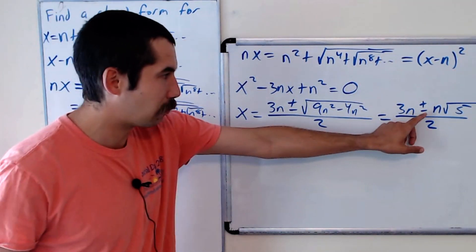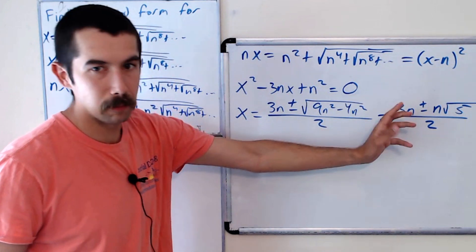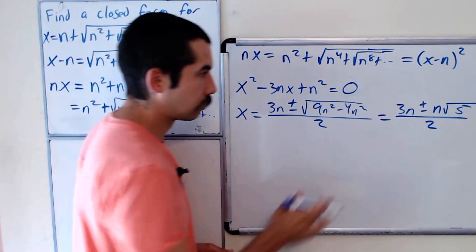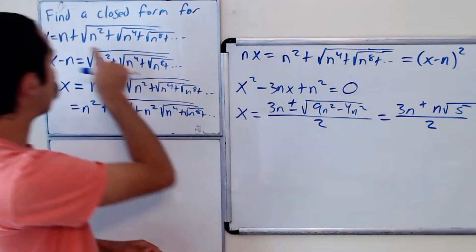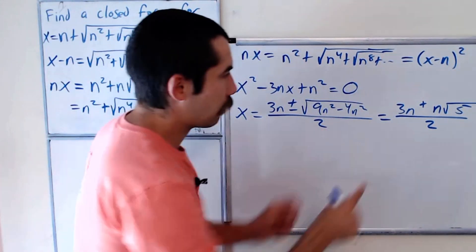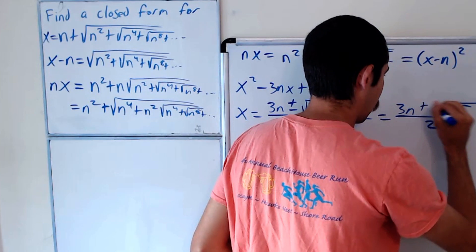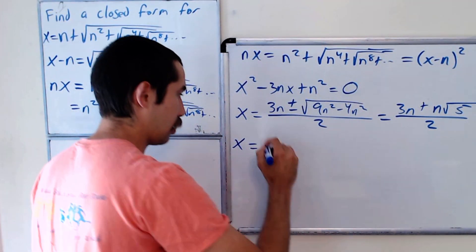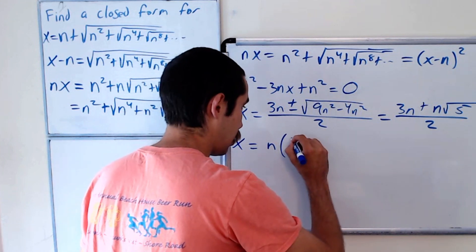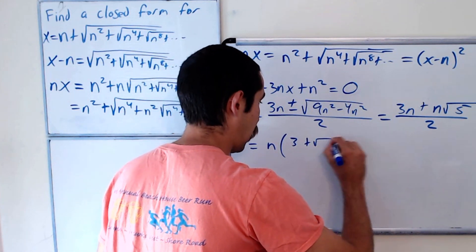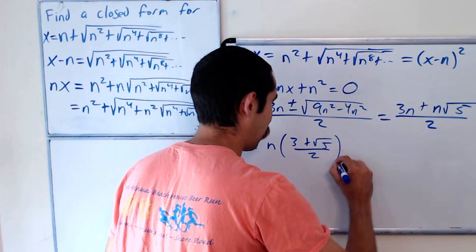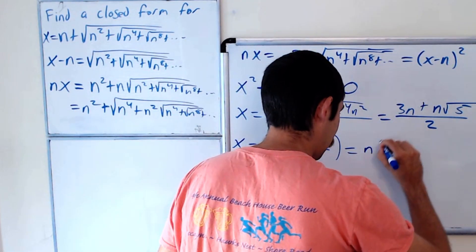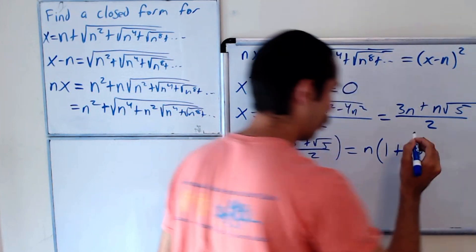But the negative one won't make sense, that's going to be smaller than n. And this number is definitely bigger than n. So we have 3n plus n square root of 5 over 2. Let's factor out an n. So it's n times 3 plus root 5. I know I'm going to keep going, but I want to write it in one last form. And we could break apart this fraction as n times 1 plus the golden ratio.